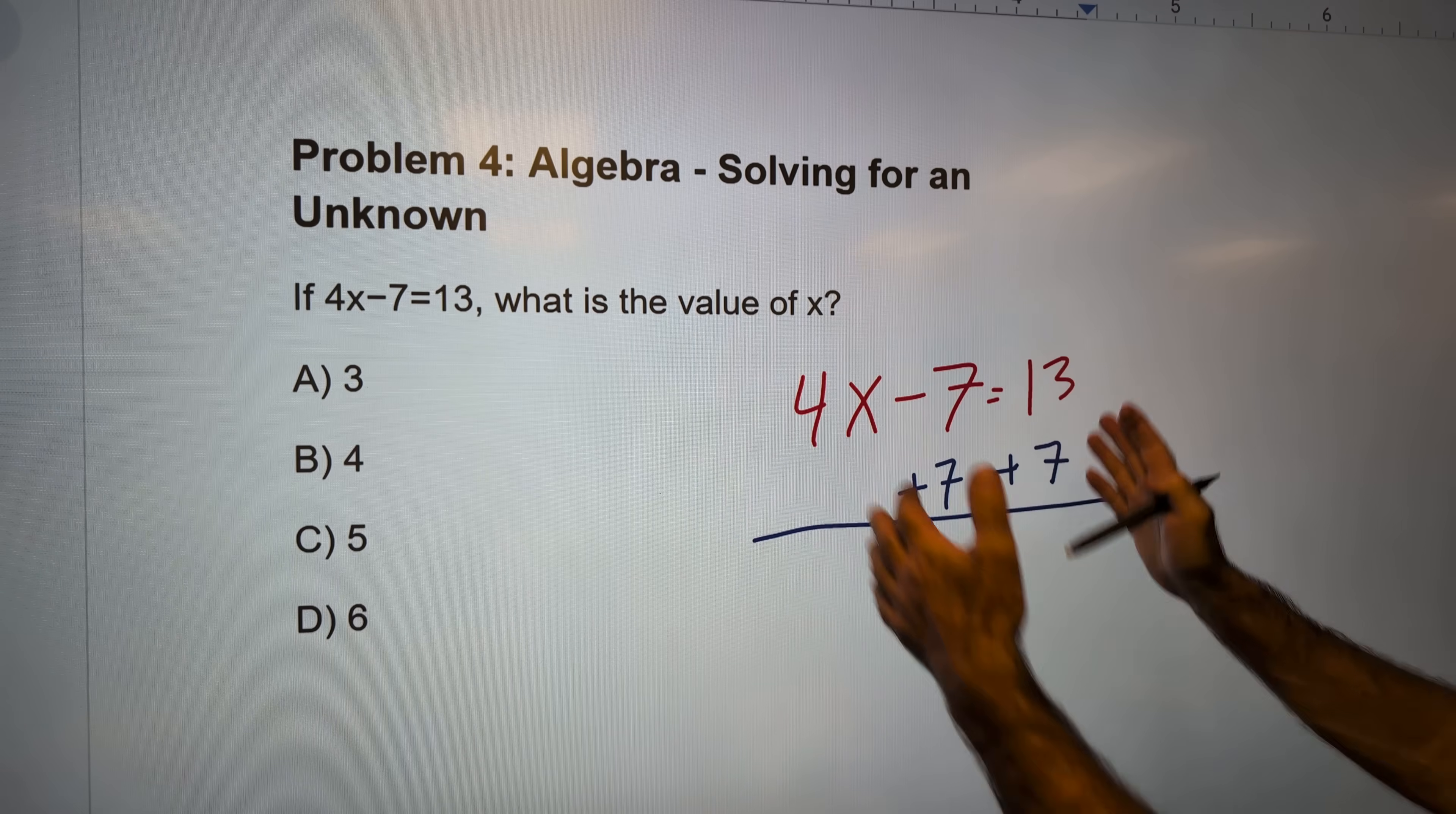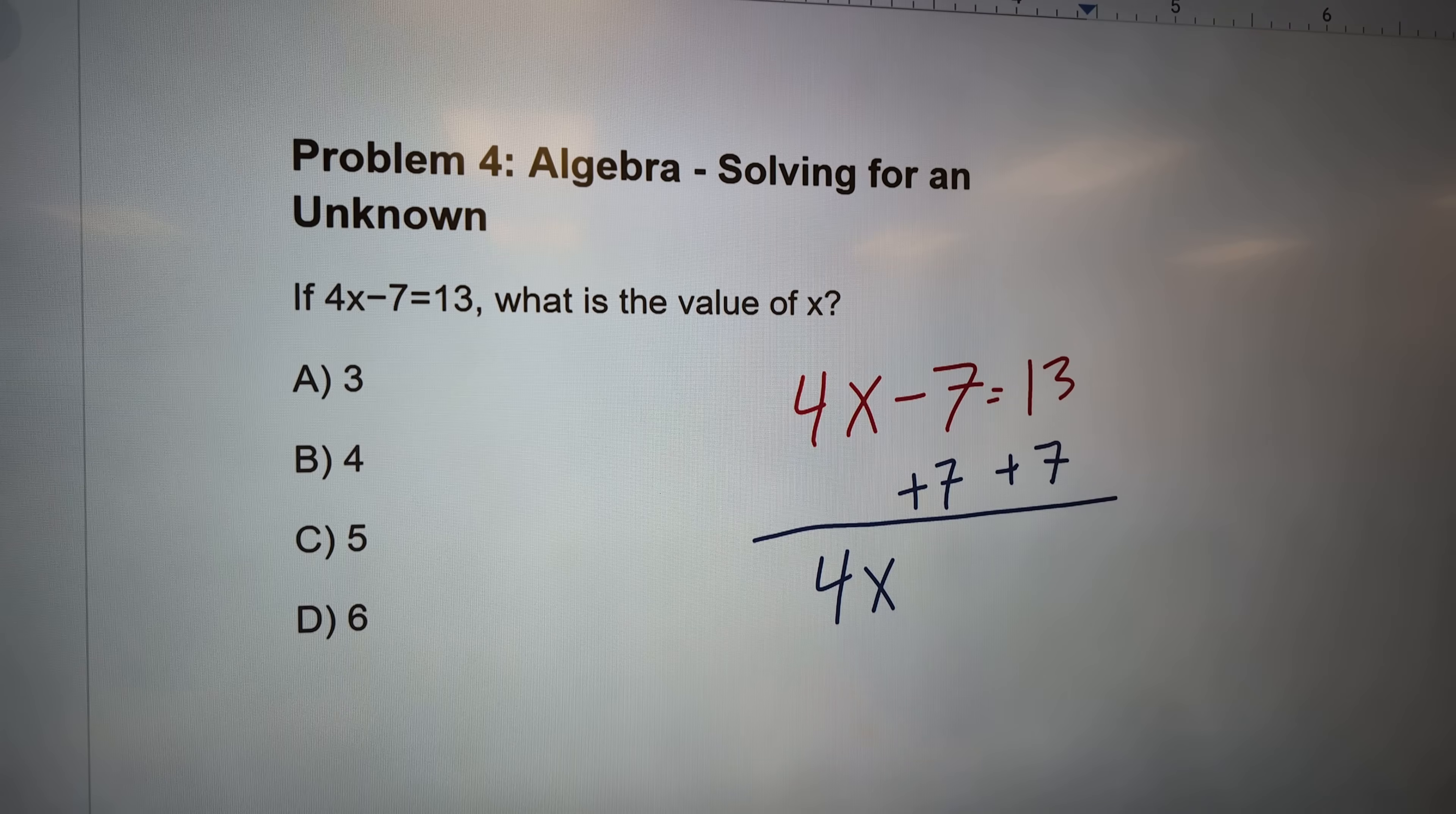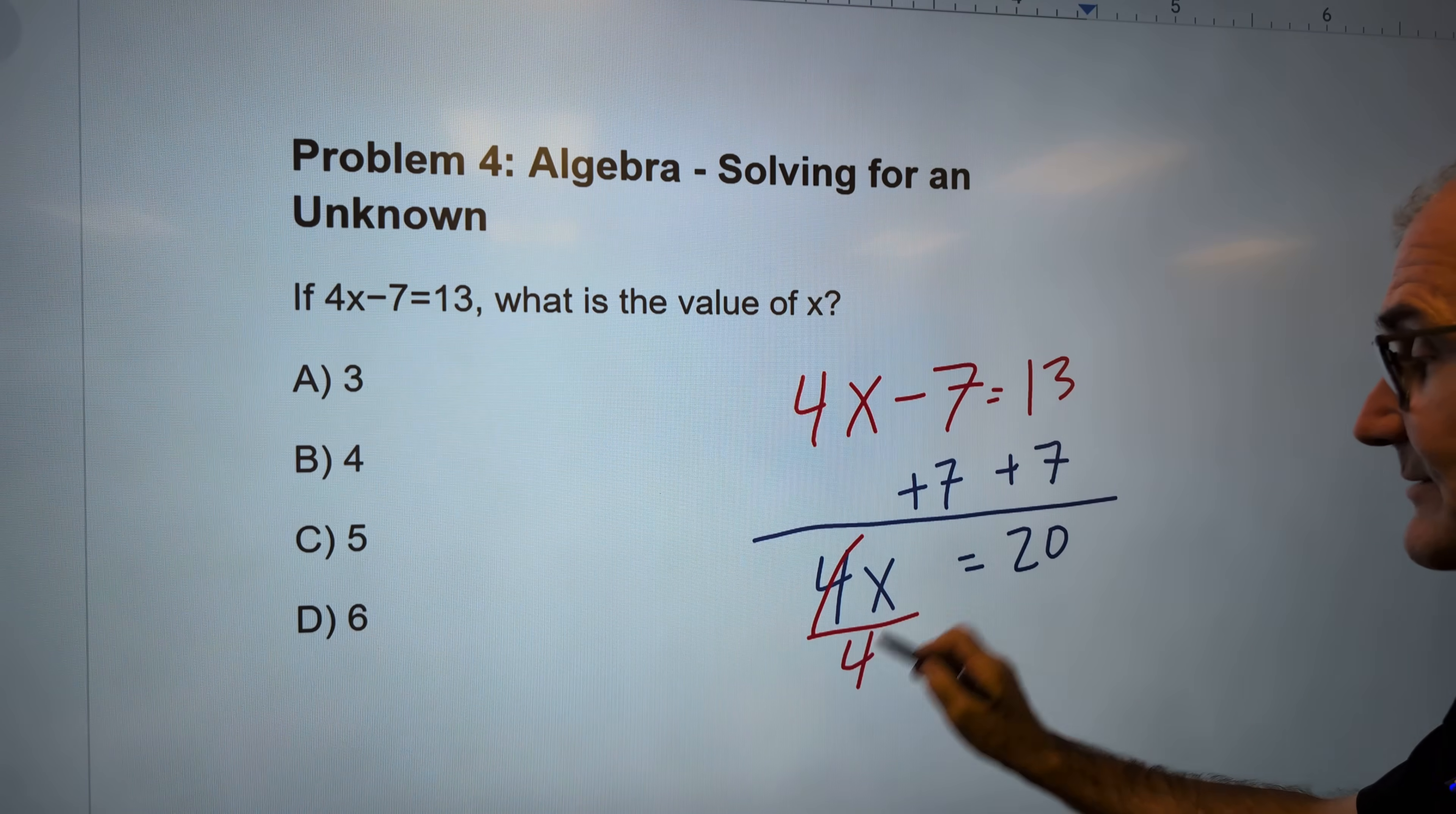I do whatever I want as long as I do the same thing on both sides of that equation. That gives me 4x by itself. -7 plus 7, they cancel. 13 plus 7 is 20. Now, the next thing I need to do is get that thing by itself. I am multiplying. I've reversed that with division. Divide both sides by 4.